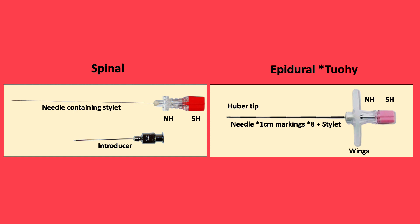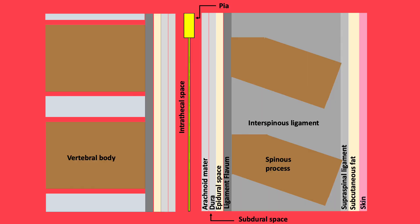As the needles are wider and have a Huber tip, there is increased resistance, and therefore it is easier to insert the needle into the epidural space as you are able to palpate the different layers through the back as you reach the epidural space. This diagram identifies the different layers which are passed through following insertion of the needle: skin, subcutaneous fat, supraspinous ligament, interspinous ligament, ligamentum flavum, the epidural space, dura, arachnoid mater, and then into the CSF.